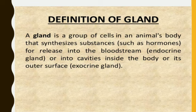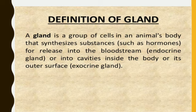We will now look at what a gland is. A gland is a group of cells in an animal's body that synthesizes substances such as hormones for release into the bloodstream. Glands that secrete internally are called endocrine glands, while those that secrete into cavities or the outer surface of the body are called exocrine glands. So there are two types of glands: endocrine and exocrine.